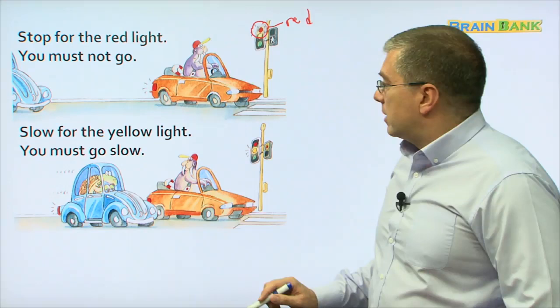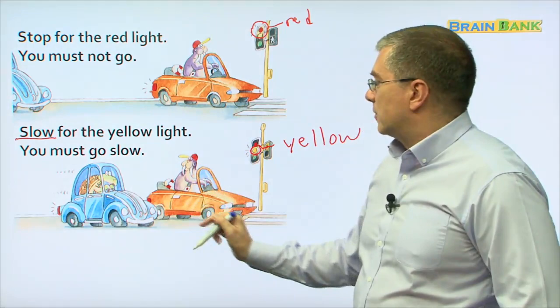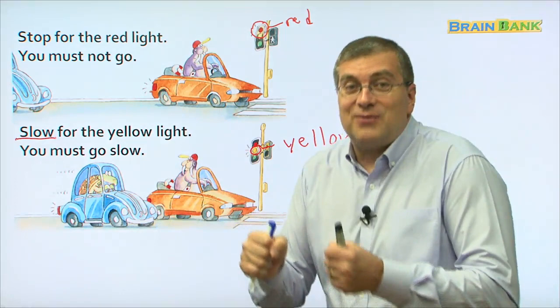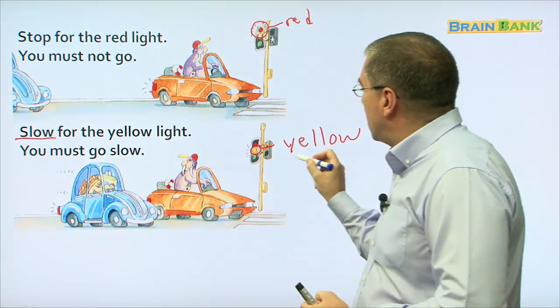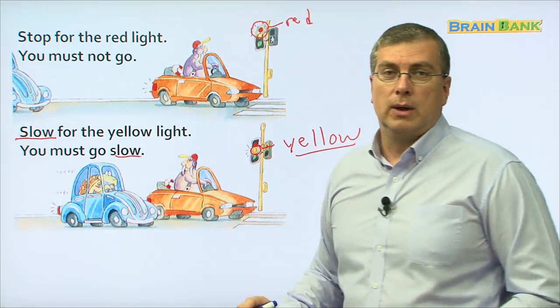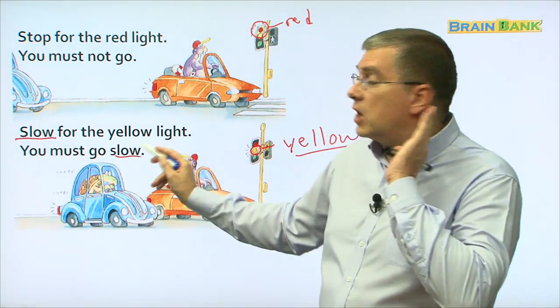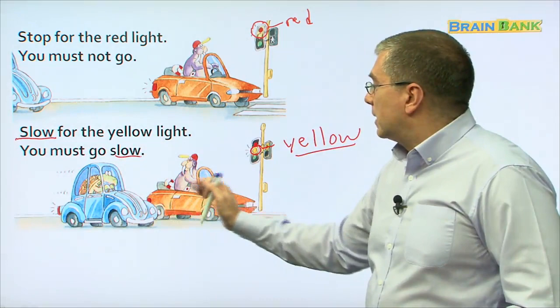What about down here? This light is now yellow. Slow for the yellow light — this car is going slow. Mr. Turtle is driving slow. Because he's a turtle? Well, no, because it's a yellow light. Slow for the yellow light; you must go slow. Can you read that? Slow for the yellow light. You must go slow. So here we have two cars going slow because it's the yellow light.